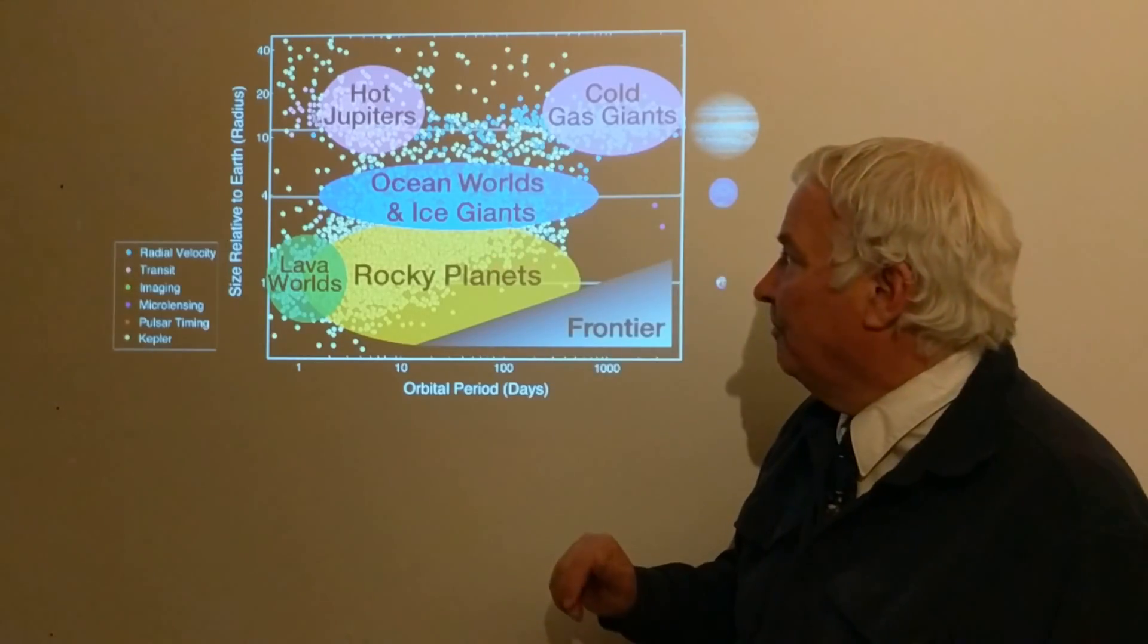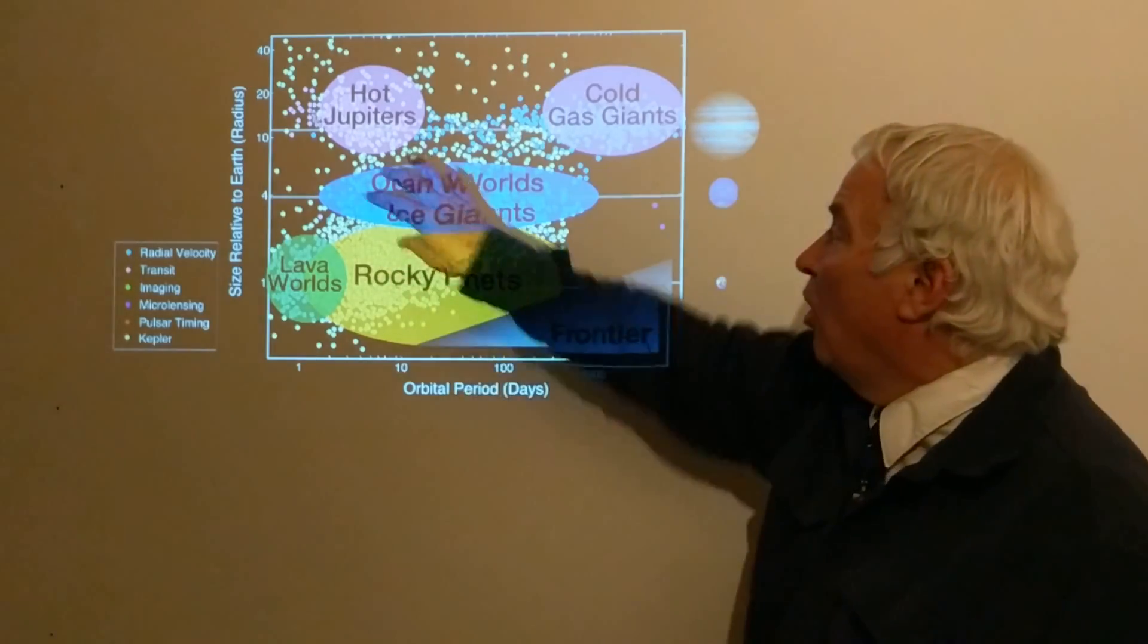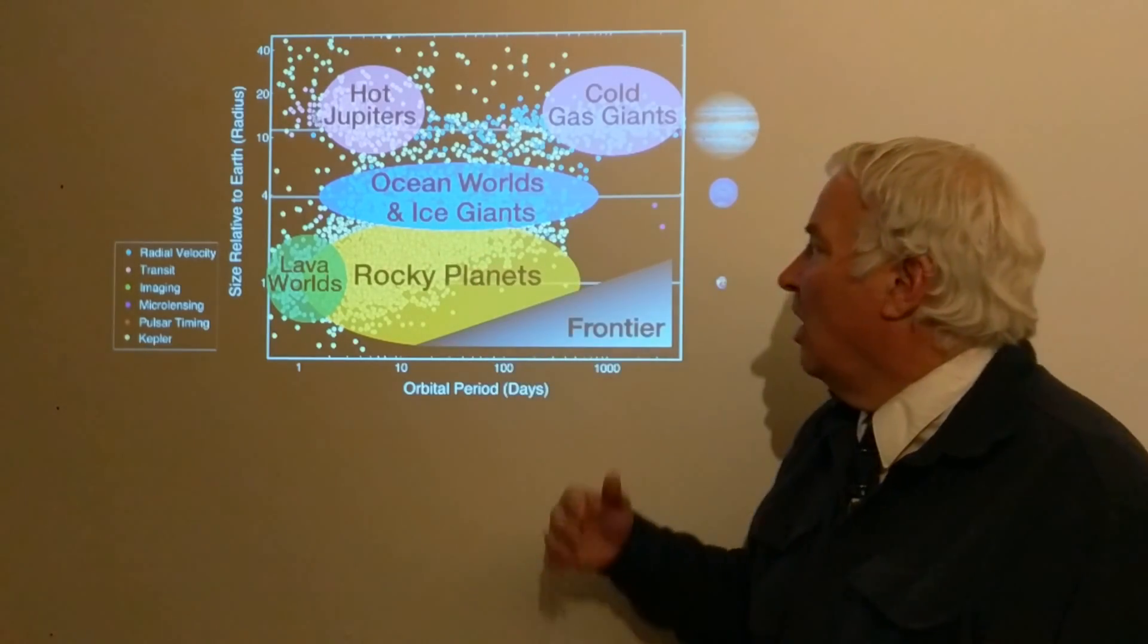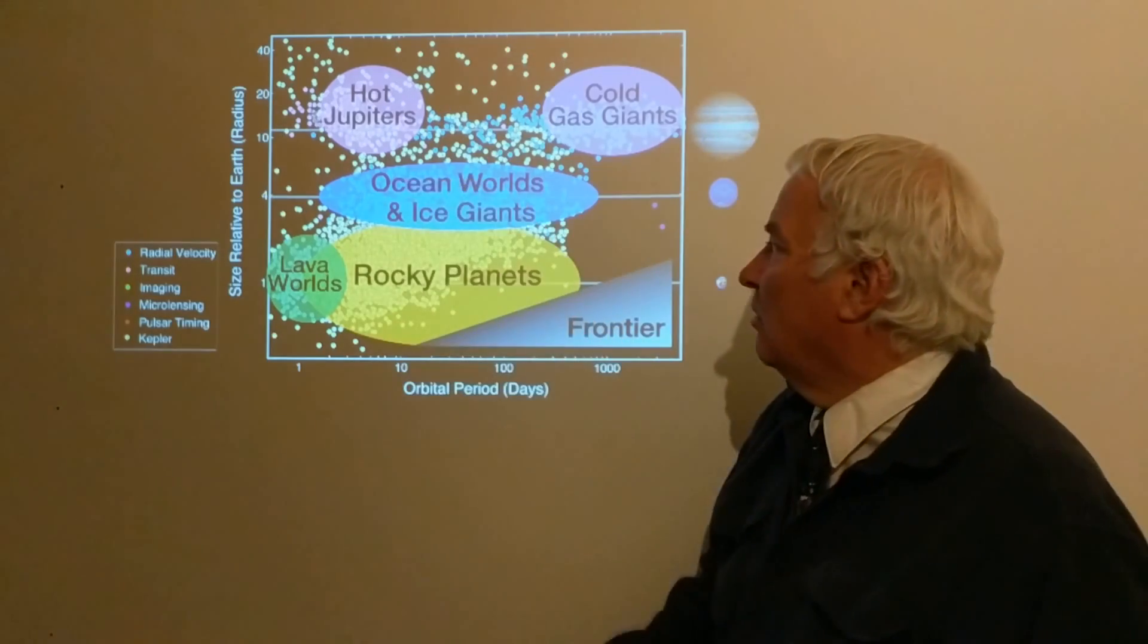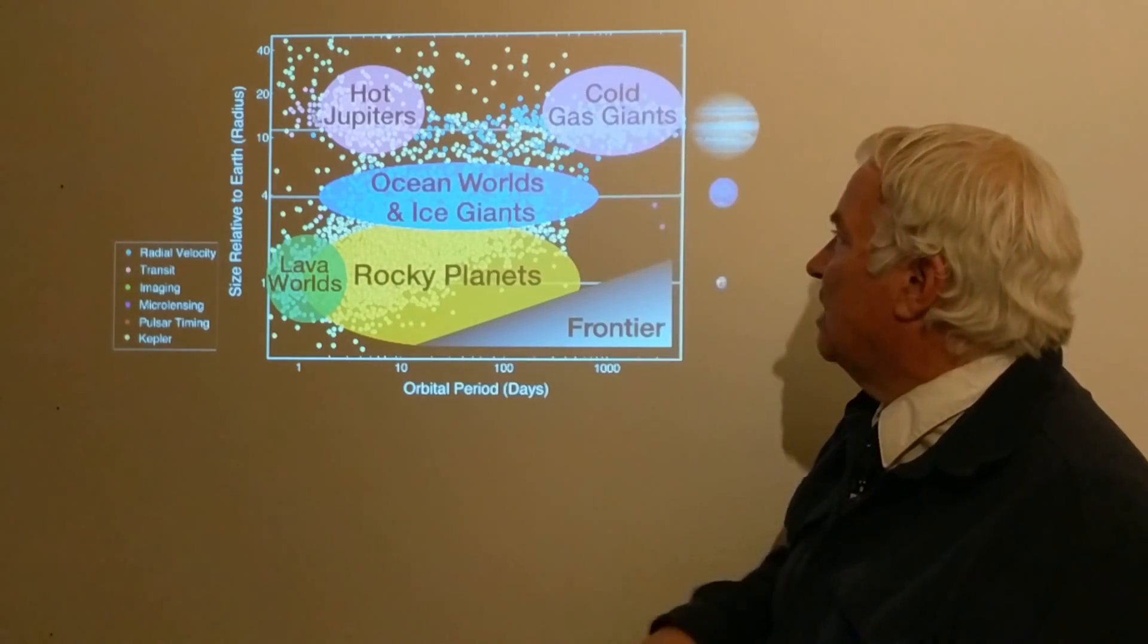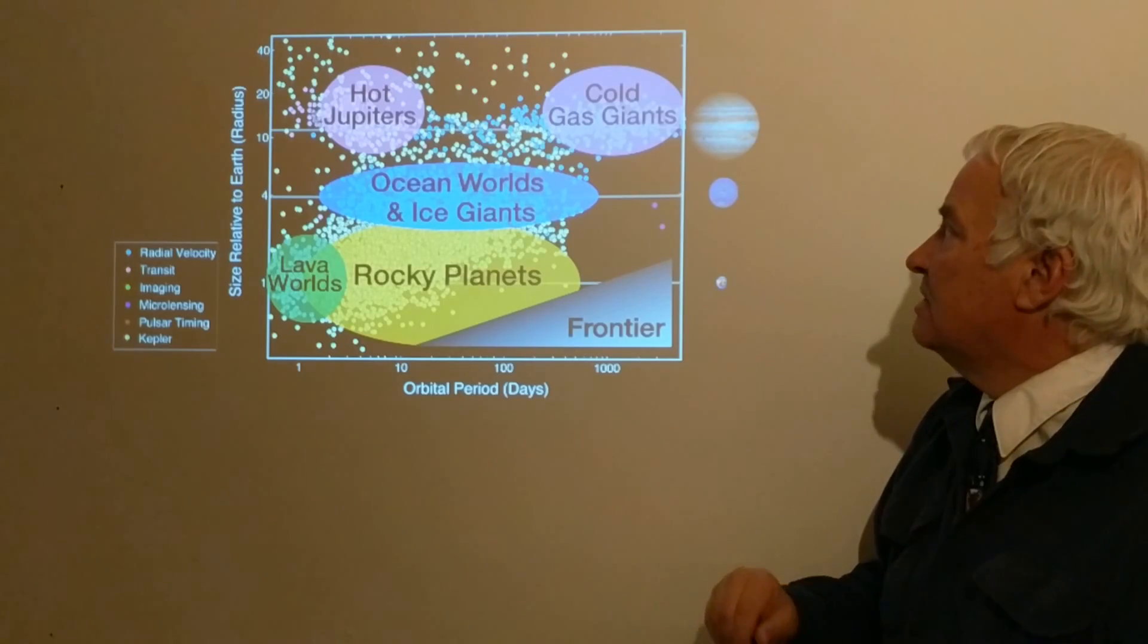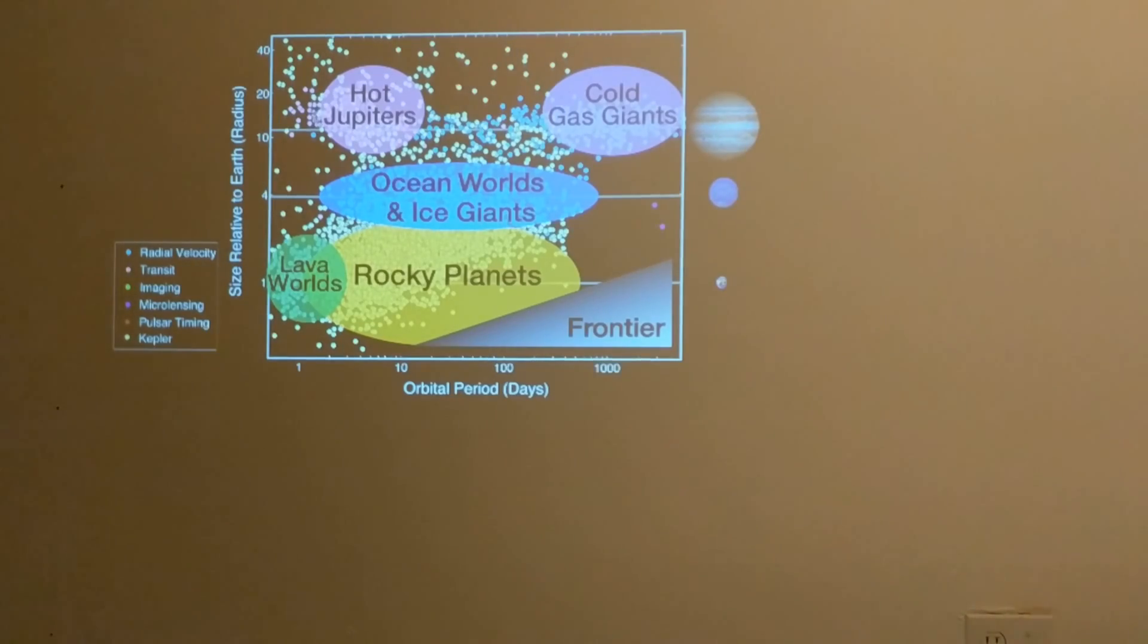We have rocky planets in this region. Ocean worlds, also not what we have in our own solar system. Ice giants—those we do have. The ice giants would have to be far enough out from their system. The ocean worlds a little bit closer in. The cold gas giants, as opposed to the hot Jupiters—we're familiar with these. These are our Jupiter and Saturn, Uranus, Neptune-like planets. This shows the different colors, the different kinds of methods used to discover them, and these are the regions that we find interesting, the different kinds of possible worlds.